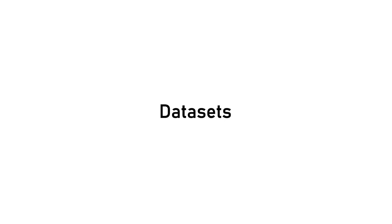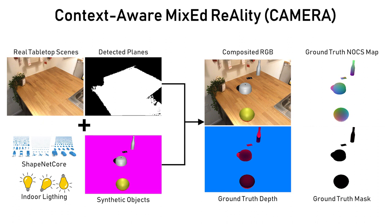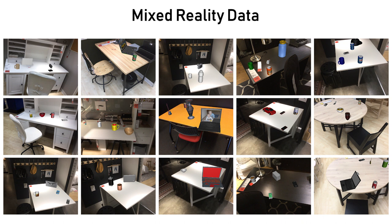A major hurdle in solving our problem is the unavailability of large-scale datasets with ground truth annotations for training and testing. We propose a context-aware mixed reality approach to generate large amounts of annotated data. This approach combines real background images with synthetically rendered objects such that the generated images contain objects at plausible scales, locations, and lighting. Here we show some example images generated by our approach.